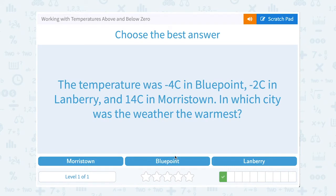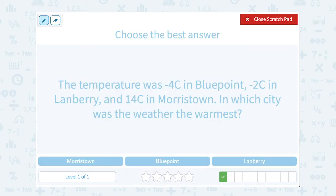The temperature was negative 4 Celsius in Bluepoint, negative 2 Celsius in Landbury, and 14 Celsius in Morristown. In which city was the weather the warmest? Well notice two of these are negative temperatures, below zero, and one of them is a positive above zero. So the positive temperature, 14 degrees Celsius in Morristown would have to be the warmest, because it's the only one above zero.